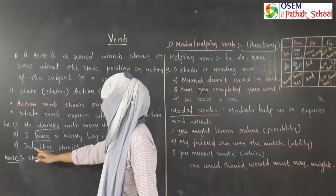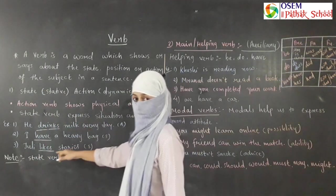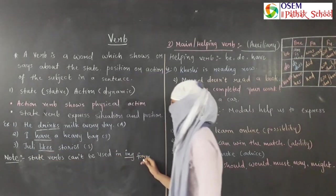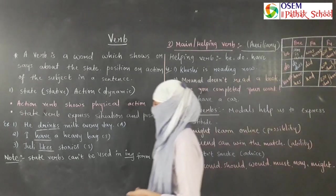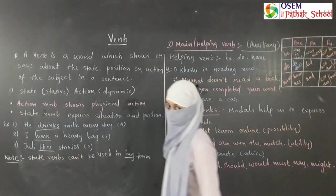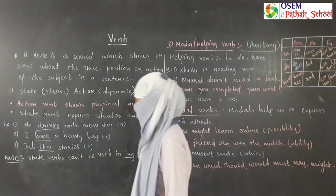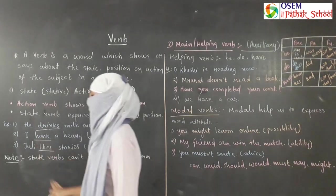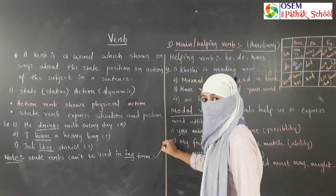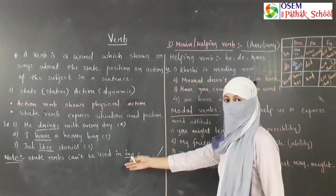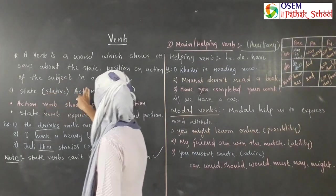Students, in English we make a common mistake: state verbs cannot be used in the -ing form. We cannot say 'Julie is liking stories.' Keep in mind that state verbs can't be used in the -ing form. This is an important point to remember to avoid a very common mistake.